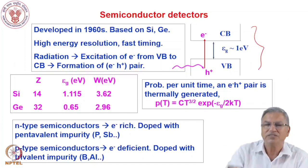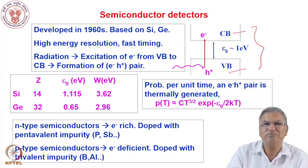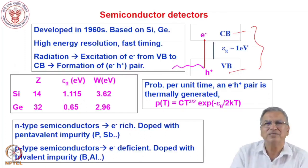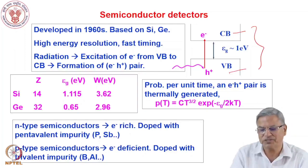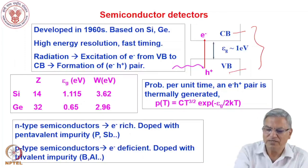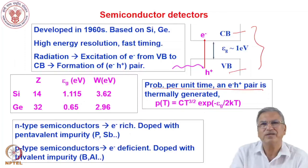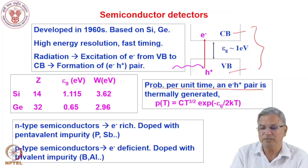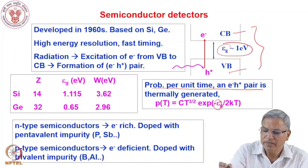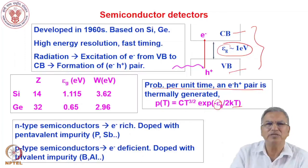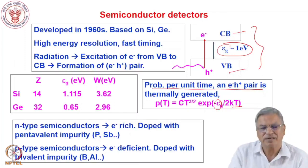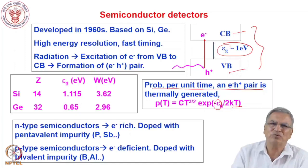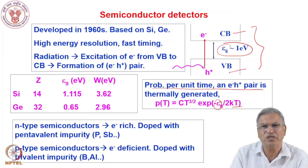In a semiconductor, we have the valence band and the conduction band. The bulk of electrons will be in the valence band, but because of temperature — even at low temperatures — there will be a significant number of electrons in the conduction band. Electron-hole pairs are generated thermally, and the probability per unit time of generating an electron-hole pair depends upon the band gap and the temperature. Even at room temperature, there will be a sizable number of electron-hole pairs in the conduction band, and we need to account for this when using these detectors.